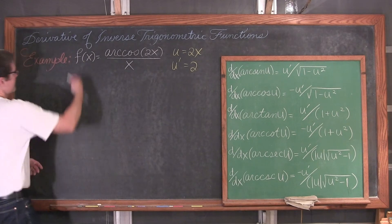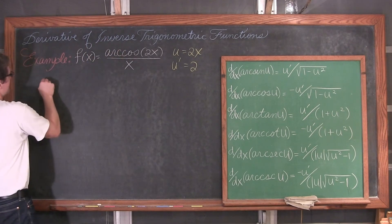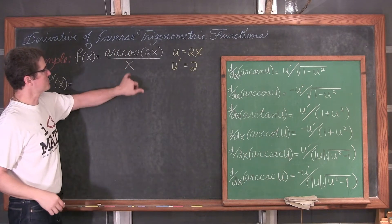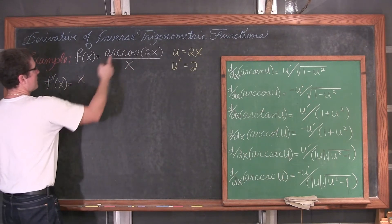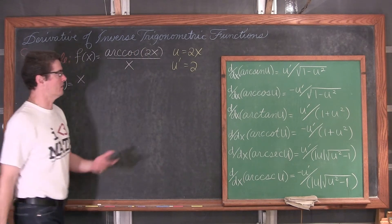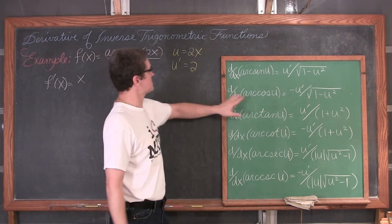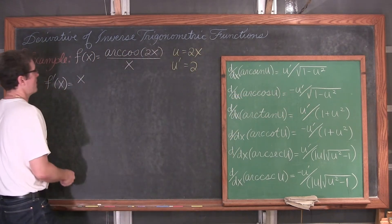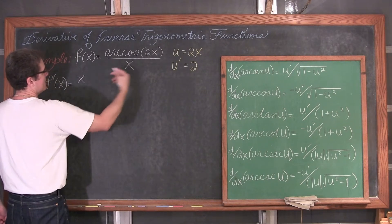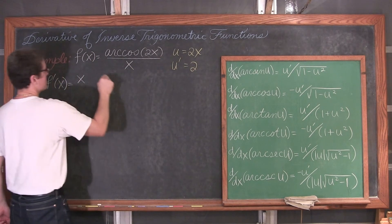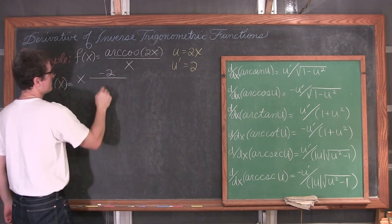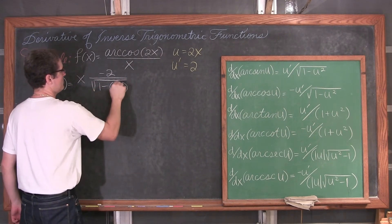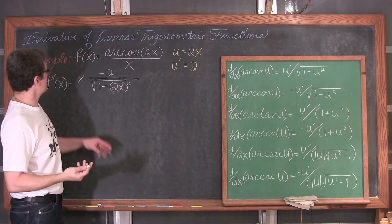So f prime of x, using the quotient rule, is the denominator times the derivative of the numerator. The derivative of arc cosine of u is the opposite of u-prime over the square root of 1 minus u-squared. So we have negative 2 over the square root of 1 minus u-squared, which is 1 minus 4x squared.